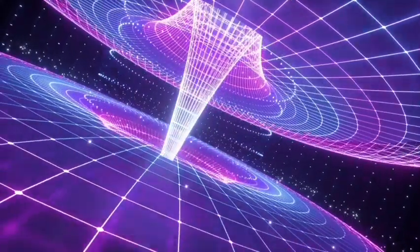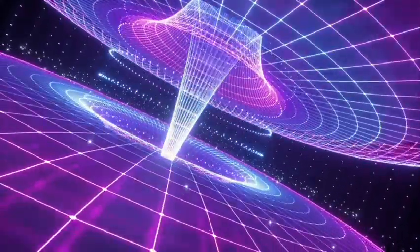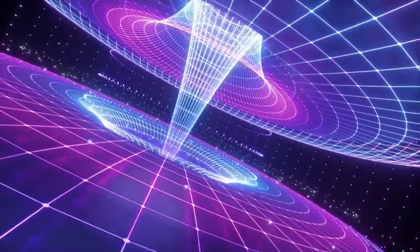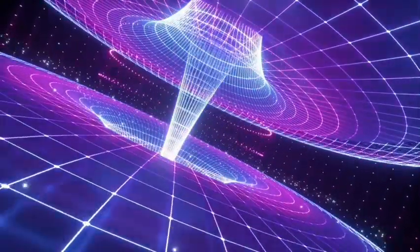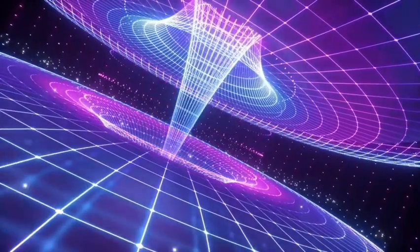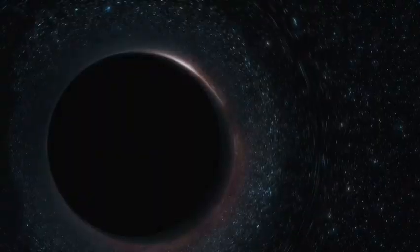However, that description is incomplete. Describing the gravitational field of a black hole in the general theory of relativity leads physical quantities, such as the spacetime curvature, to diverge at the center of the black hole.